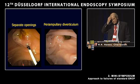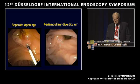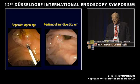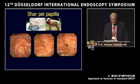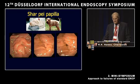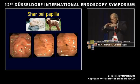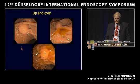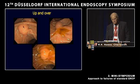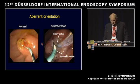Here are some case examples. This case shows a separate orifice — you can see the pancreatic stent in the pancreatic orifice, obvious ampullary tissue, a sphincterotomy here, and the bile duct was up here separately. All of you have seen examples of periampullary diverticula. This is the Sharpay papilla — named after the Sharpay dog — with multiple folds you have to navigate around. This is an example of the up-and-over: you go up, then down, then up again. And here is an example of the aberrant relationship between the biliary and pancreatic orifice.